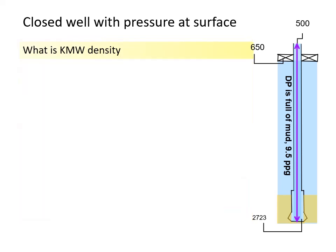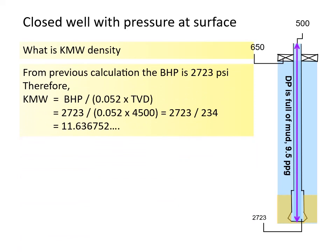What is kill mud density from the previous data? From previous calculation the bottom hole pressure is 2723 psi, while the well TVD is 4500 feet. Therefore, kill mud density is...